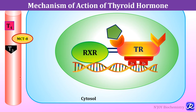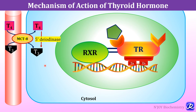Now let us see what happens in the presence of thyroid hormones. Thyroid hormones are present in the circulation and both T3 and T4 are transported inside the cell with the help of monocarboxylate transporter, most commonly monocarboxylate 8 transporter. When both T4 and T3 are transported inside the cell, T4 is converted to T3 by the action of enzyme 5'-deiodinase, and the action of thyroid hormone is mediated by this T3.